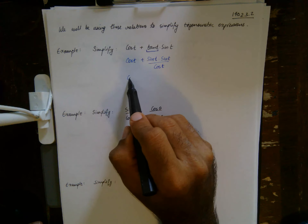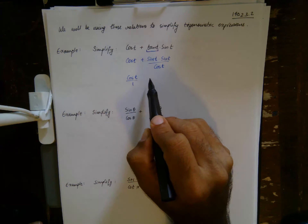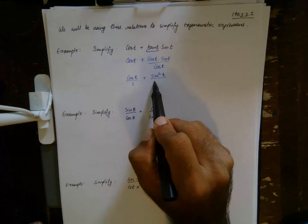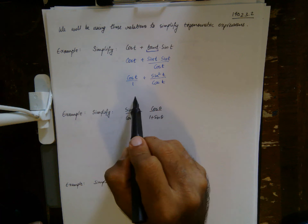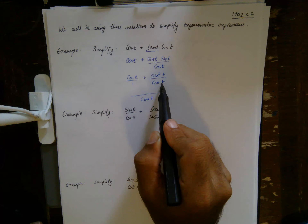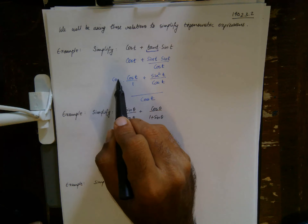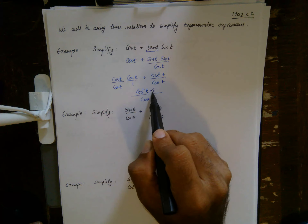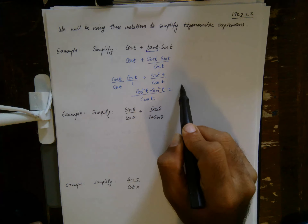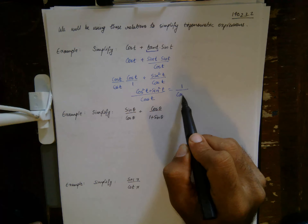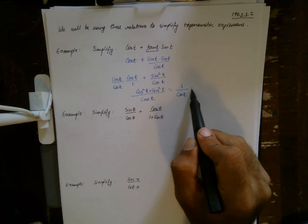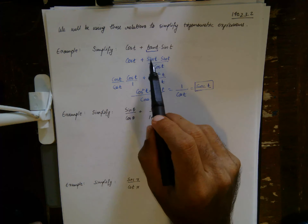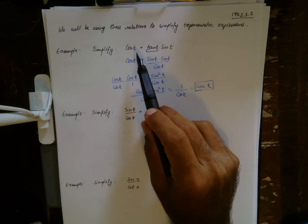This gives us cosine(t) over 1, plus sine(t)/cosine(t) times sine(t), which is sine²(t)/cosine(t). Combining these fractions with a common denominator of cosine(t), I get cosine²(t) + sine²(t) over cosine(t). Using the Pythagorean identity, that numerator equals 1, and 1/cosine(t) is simply secant(t). We started with three different trig ratios but ended with a single one — that's simplification.